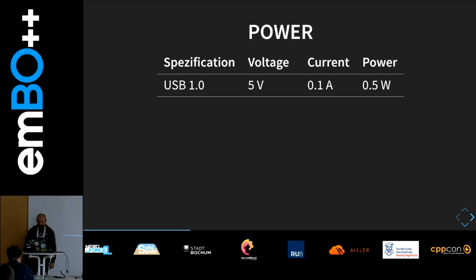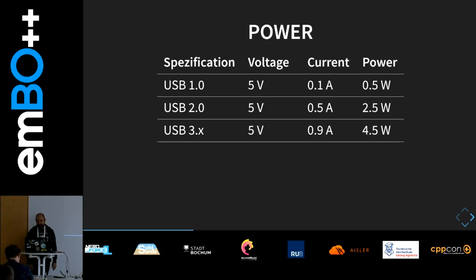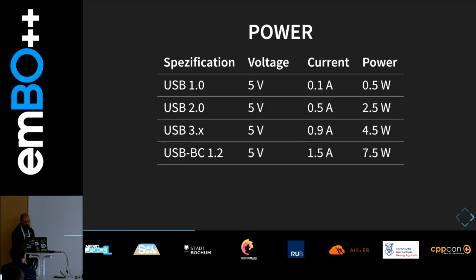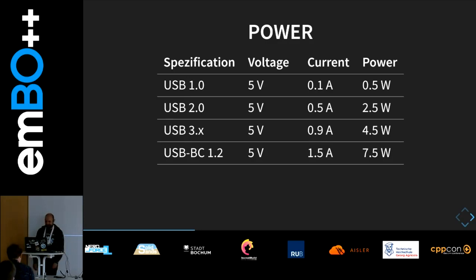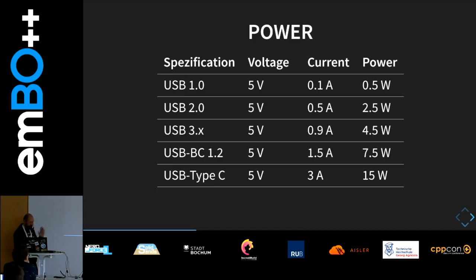Now to the power supply. USB 1.0 had only half a watt at five volts. USB 2.0 extended it to two and a half watts. USB 3.0 extended it even more. Then they had the glorious idea to use the connectors for charging phones and other battery devices — that's why they defined a specification called USB Battery Charging. Now you have still five volts but more ampere, and the maximum power is the maximum allowed for the connectors.